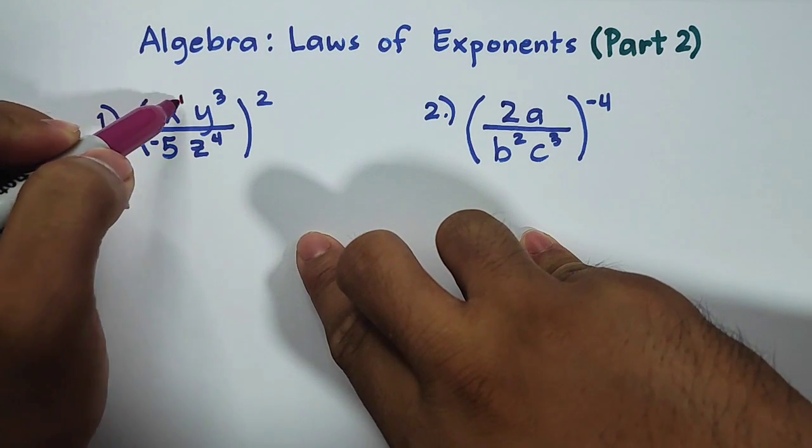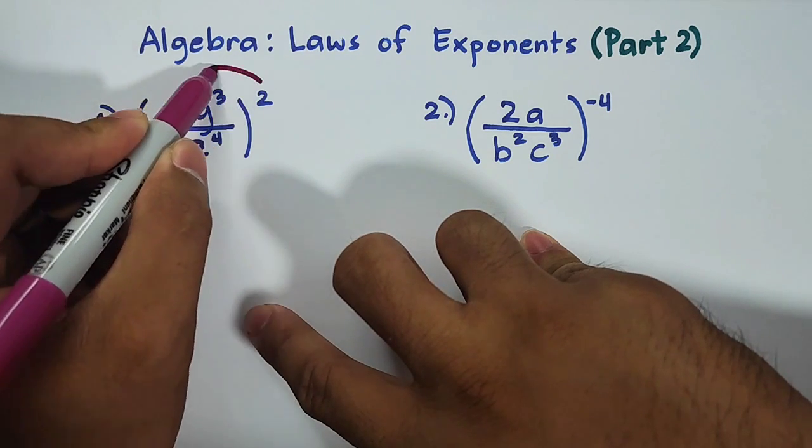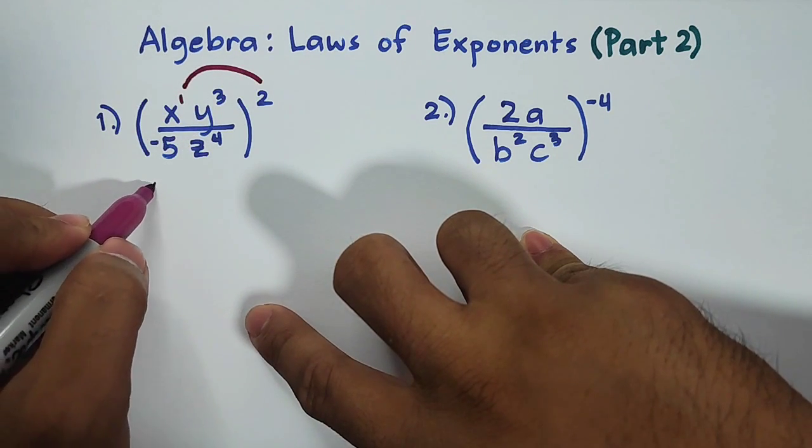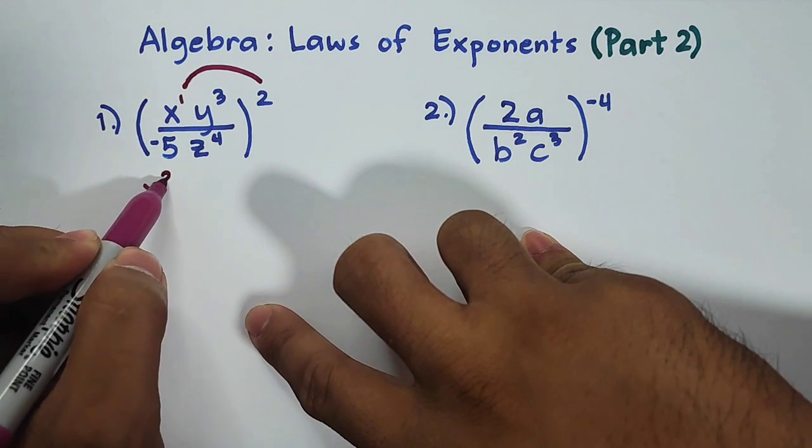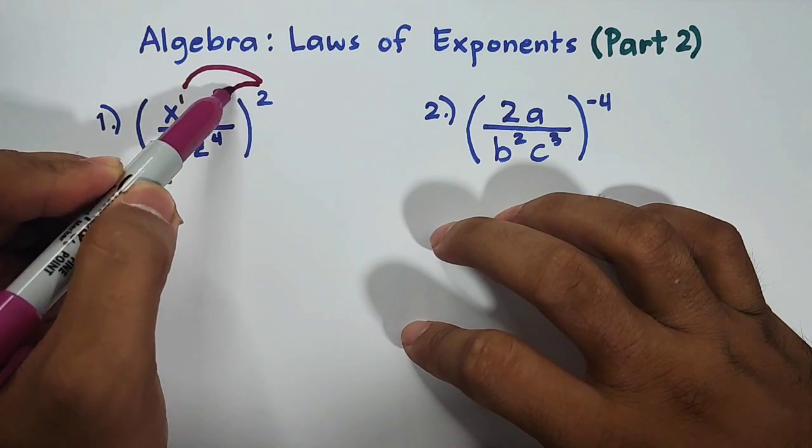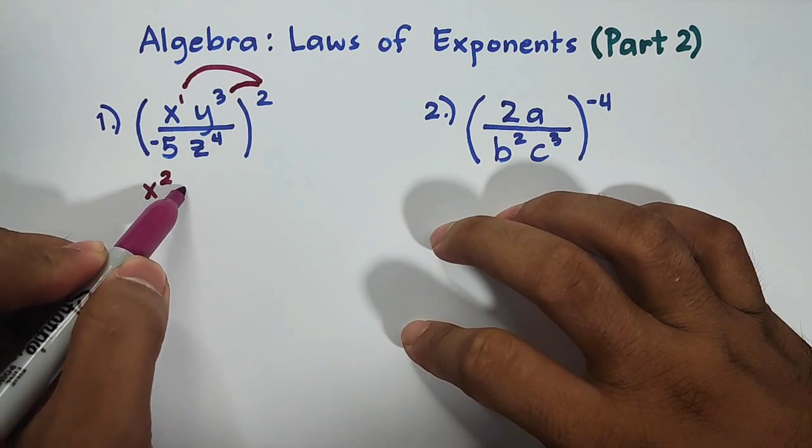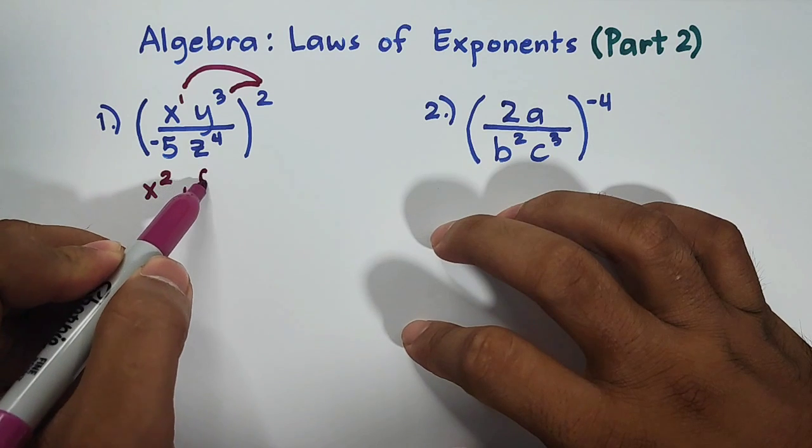Let's say for example here, in our variable x. So we will multiply the exponent of 2 here. It will become x raised to 1 times 2, that is x squared. For the y variable, we will also multiply its exponent. We have y raised to 3 times 2, that is equal to 6.